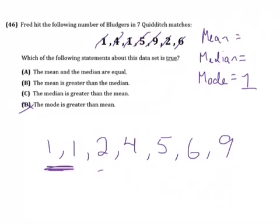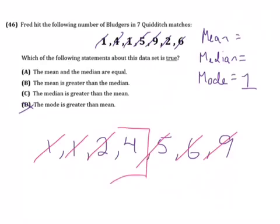Now let's look at our median. To find the median, please recall we cross out the low and the high, the low and the high, the low and the high, and there's one number in the middle. That's our median: 4.